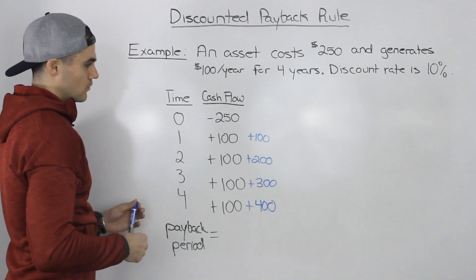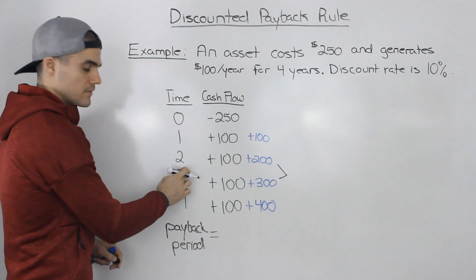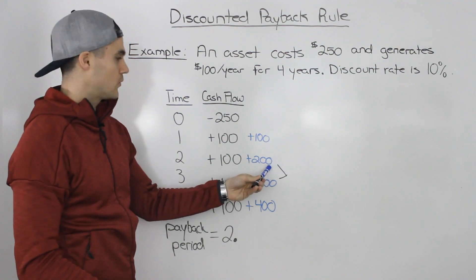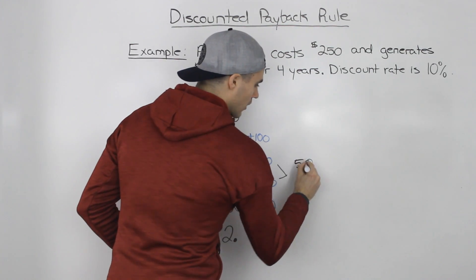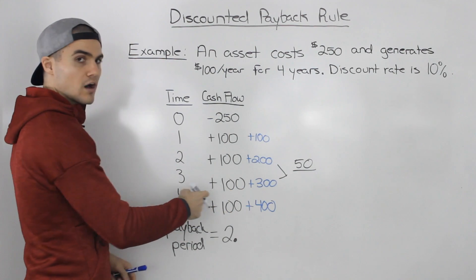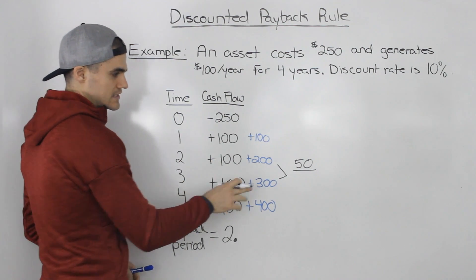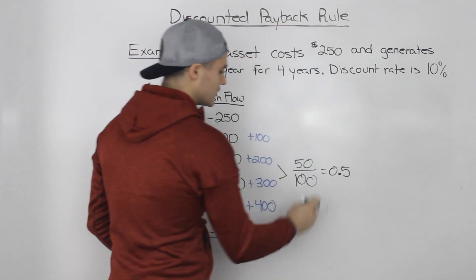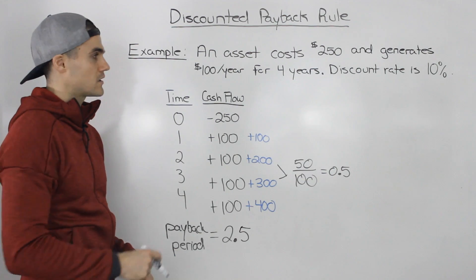We recover $250 somewhere between the second and third year, so our payback period is going to be 2-point-something years. Up until year two we've recovered $200, but we want to recover $250 — there are $50 more left to recover. In that third year we're making $100 worth of cash flow throughout the year, so it takes 0.5 years ($50 divided by $100). The payback period is 2.5 years.